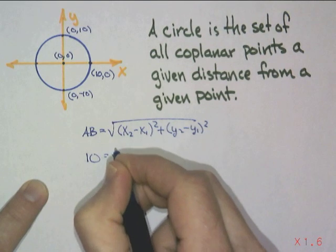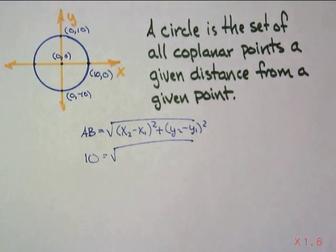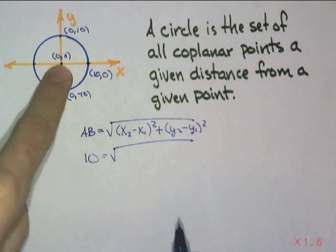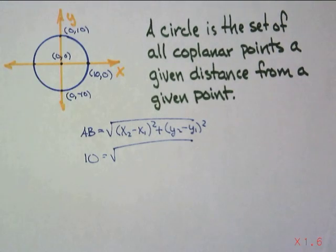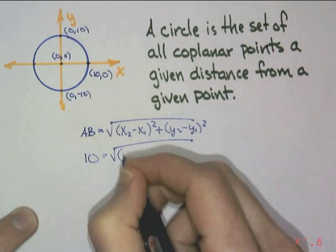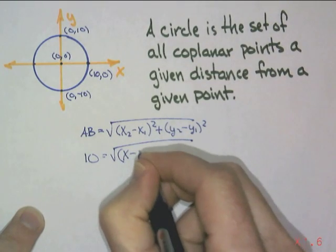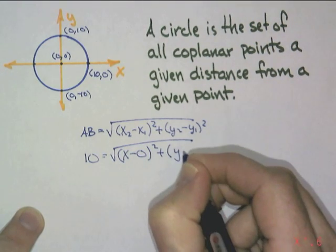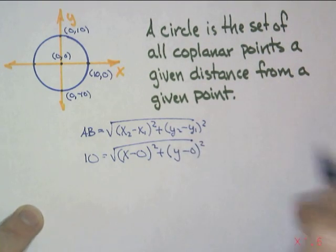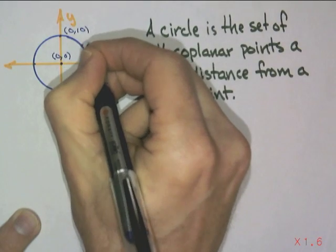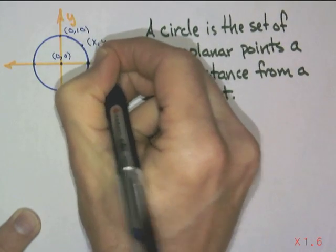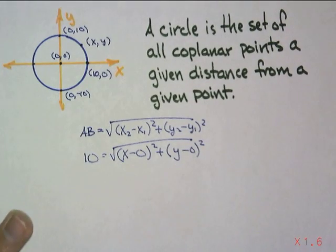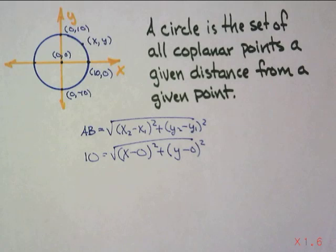Okay. Well, what are they all equal distance from? The center. The (0,0). So, I'm going to write it as (x - 0)² + (y - 0)² = 10. Because all these points are anywhere in here. There's an x and a y. And it's 10 away. 10 away, then it is on that circle. And that's pretty amazing.